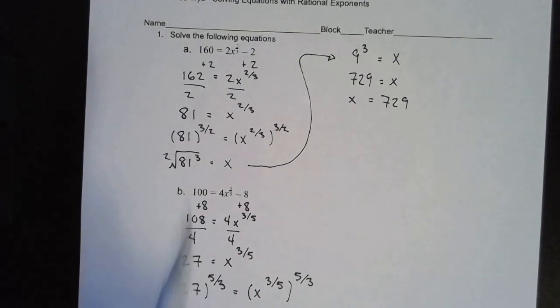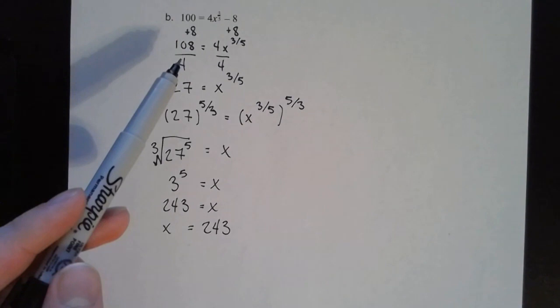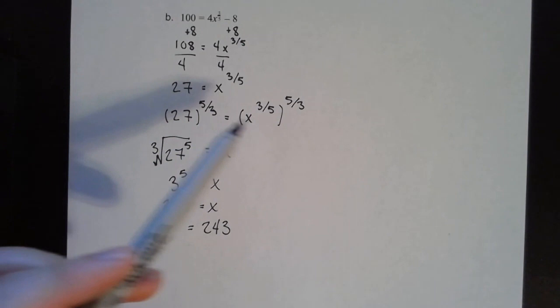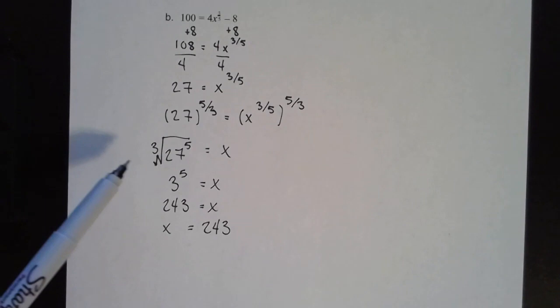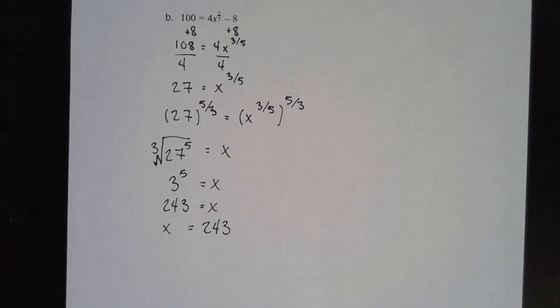Same process for part b. We need to get x to the three-fifths by itself — add 8 on both sides, so I get 108 divided by 4, which is 27. Now I have x to the three-fifths power by itself. To get rid of that three-fifths exponent I raise both sides to the five-thirds power. 27 to the five-thirds written in radical form: the cube root of 27 is 3, and 3 to the fifth power is 243. So x equals 243. If you have questions on this lesson, please come to mine, Ms. Claywell's, or Ms. Parton's office hours. I hope you all are doing well, staying safe, staying healthy. Have a good day.